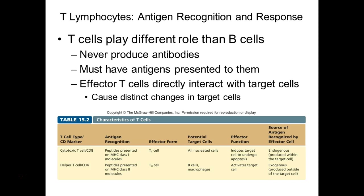Helper T cells, as their name implies, help. They have the CD4 marker, which allows them to communicate specifically with MHC class 2 — found on B cells, macrophages, and dendritic cells, collectively called antigen-presenting cells. The helper T cell helps activate B cells, macrophages, and dendritic cells. Note that dendritic cells usually activate the T cell — so the interaction goes the other way in that case.